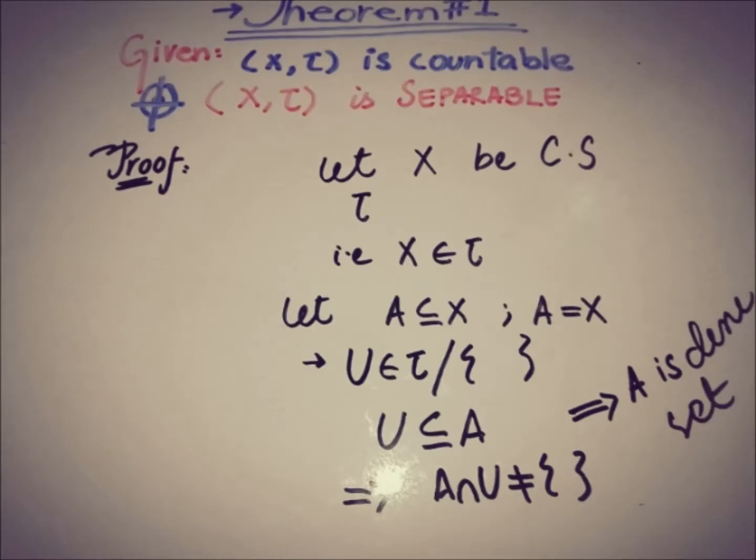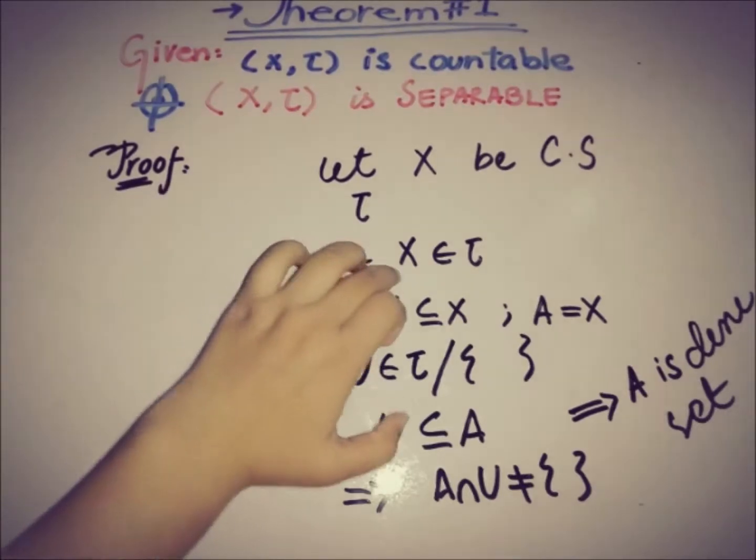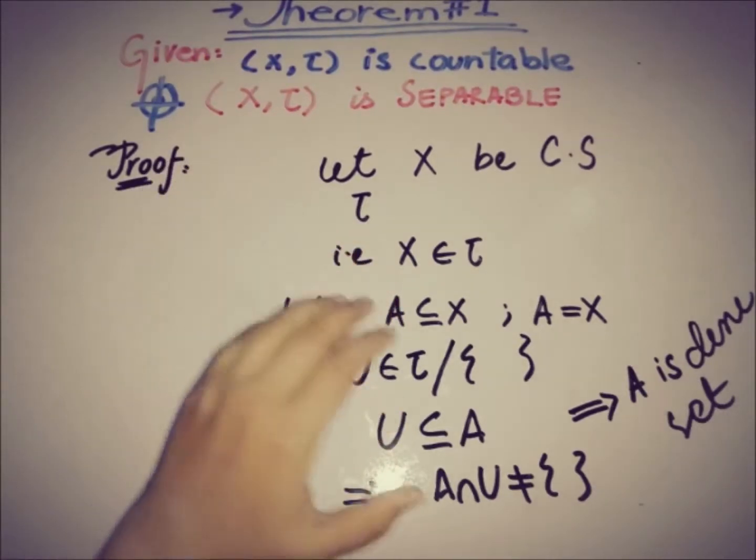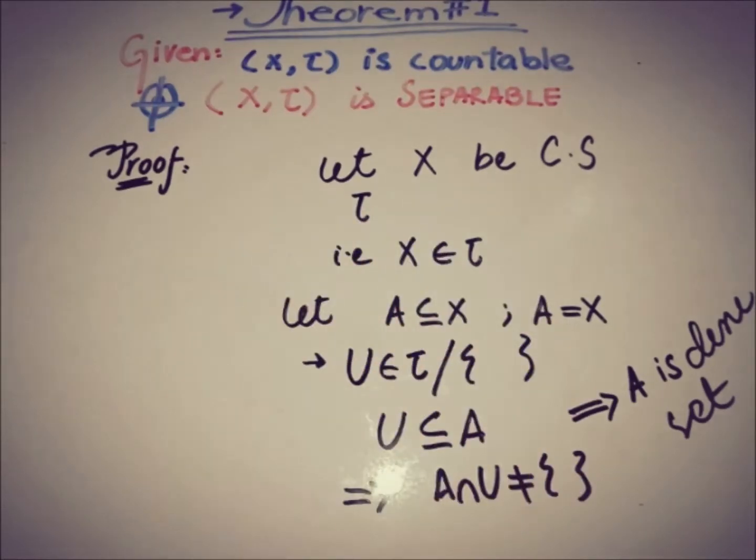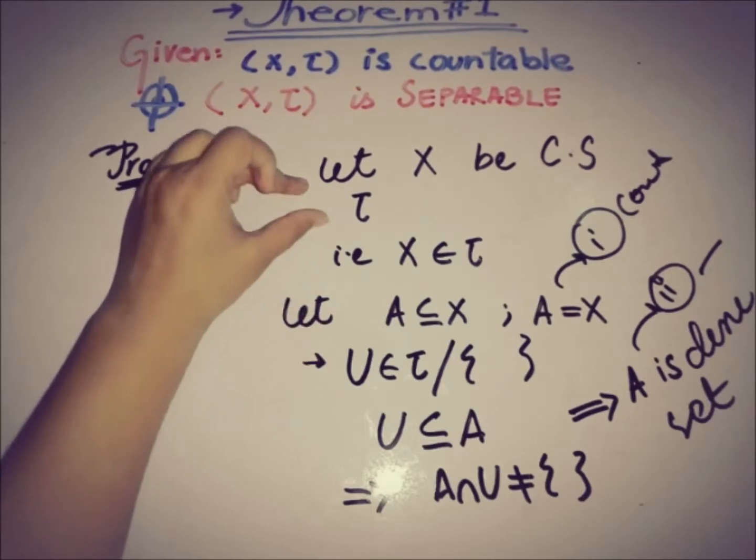So, the second condition of the separable space has been satisfied. The first was satisfied in this area that X is a countable space by definition, and if we take A equal to X it is also countable. This was the first condition satisfied about the countable set and the second was about the dense set. Now by combining all of this we can say that (X, τ) is a separable space.